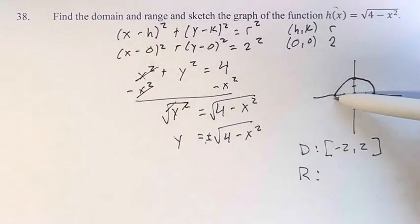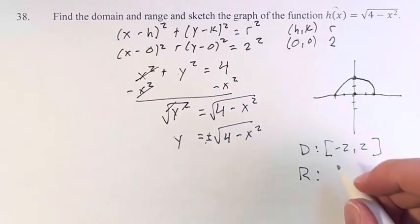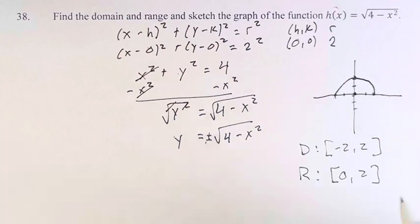And the range, this is our lowest value at y = 0. Our highest value is y = 2, so it's from 0 to 2. Once again inclusive, so we do the brackets.